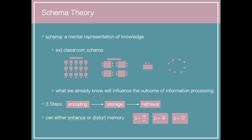Schema theory can either enhance or distort memory. An example of schema theory enhancing memory is a mnemonic. The equation for density is mass over volume, which is hard to memorize. But if you notice the equation kind of looks like a heart — and hearts are part of our schema — associating the heart shape with the equation helps us easily remember: density equals mass over volume.